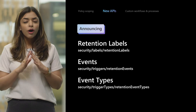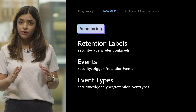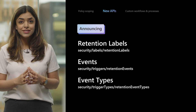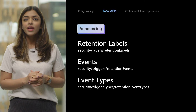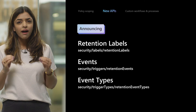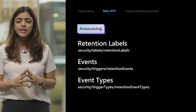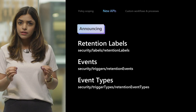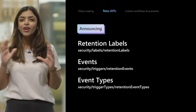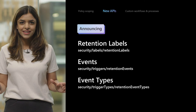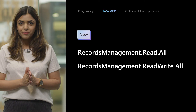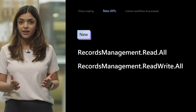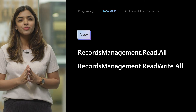While our vision is to bring all of data lifecycle and records management operations to Graph, we are starting this journey with the cornerstone of records management, which is retention labels. Additionally, APIs for retention events were the biggest ask we had from our customers and partners, since these need to be triggered from outside of Microsoft 365 and authentication can pose a challenge otherwise. Along with these new APIs, we are introducing two new permissions which you will need to access our APIs: RecordsManagementReadAll and RecordsManagementReadWriteAll.